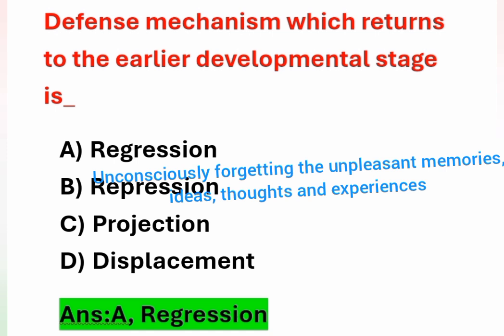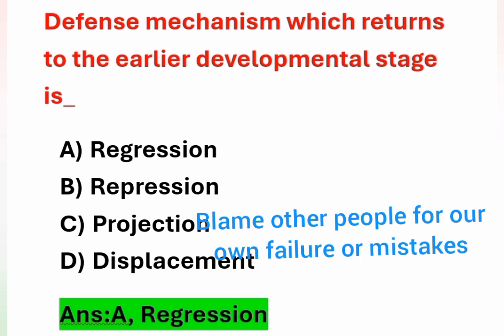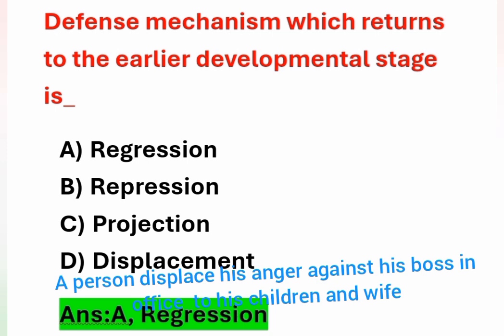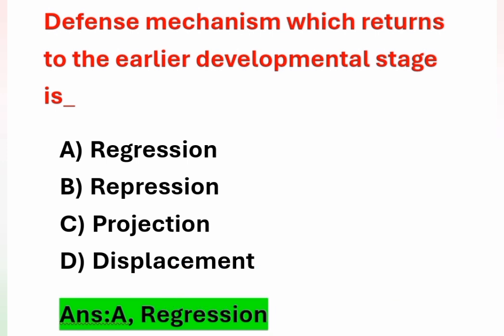Explaining the other defense mechanisms: Repression — the person consciously forces unwanted thoughts, memories, painful situations, or desires into the unconscious mind. Projection — consciously or unconsciously blaming other people for one's own mistakes. Displacement — a person displays anger or tension experienced in the workplace toward their children or spouse; it involves showing feelings toward a different person.